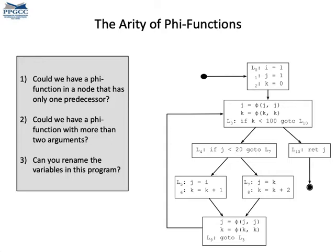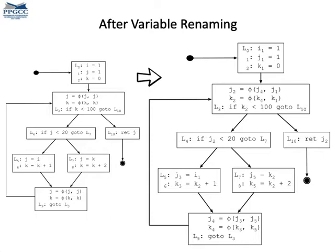Before we move on, consider these questions. We could in principle have a phi function with just one argument — in LLVM, for instance, they exist — however, the algorithm we are seeing here will never create them. And we can have phi functions with as many arguments as a basic block has predecessors. You can also check that the SSA properties hold in the renamed program — that definitions dominate all their uses.